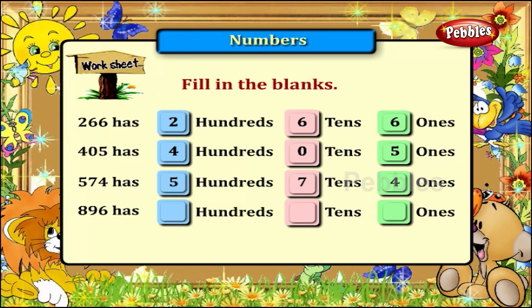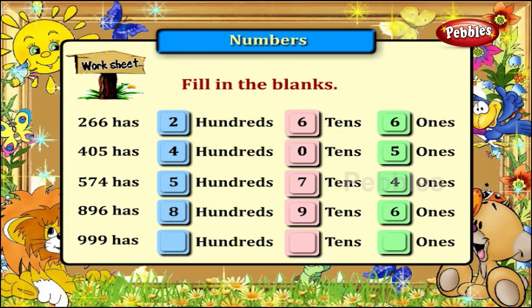896 has eight hundreds, nine tens and six ones. 999 has nine hundreds, nine tens and nine ones.